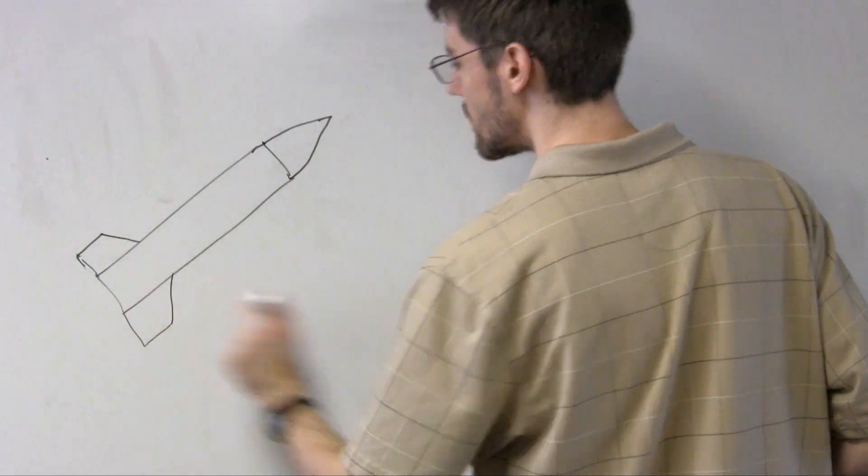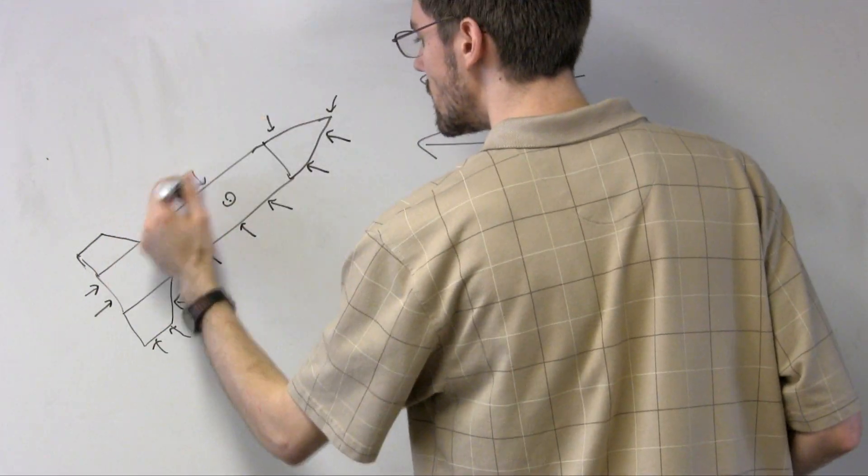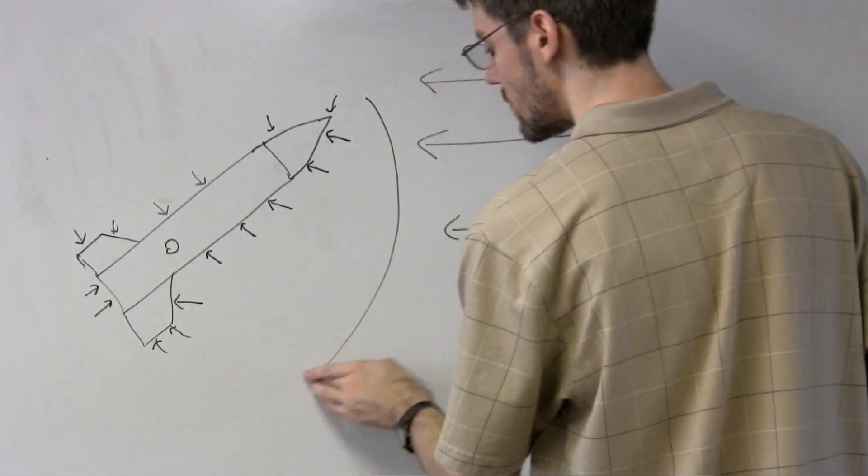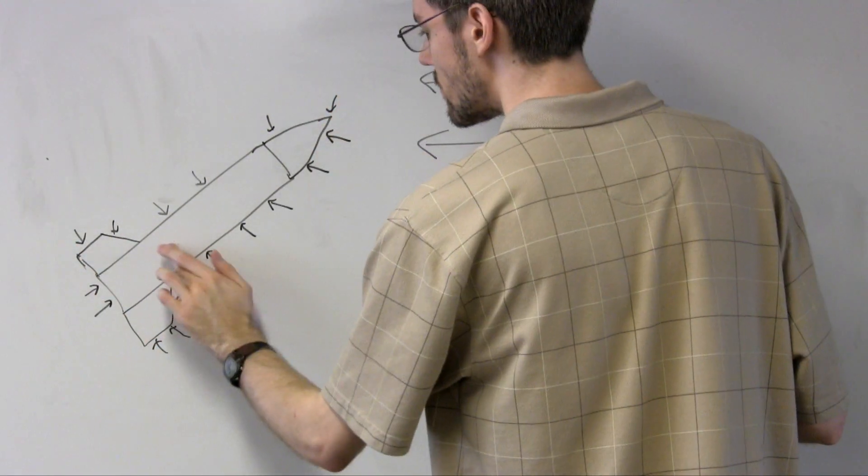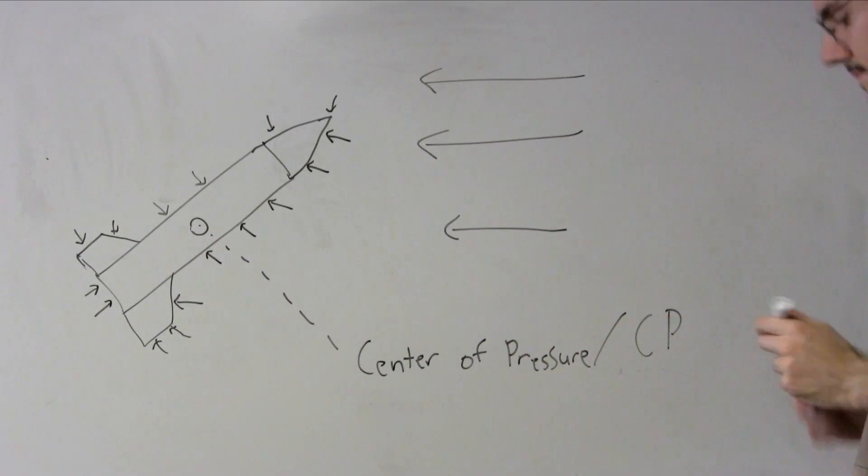Imagine we have a rocket, and we pin it somewhere along its body. When air flows over it, the flow exerts pressure forces on every patch of its surface. Depending on where we pin the rocket, it may be spun one way or the other. However, if we pin it at exactly the right point, it won't spin at all because the forces balance. That point is called the center of pressure, or CP.